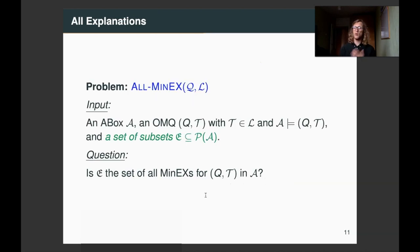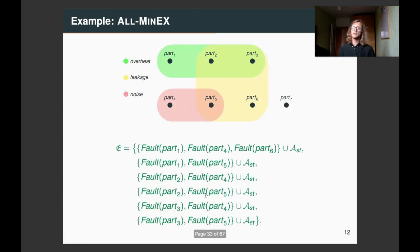Another fundamental problem is all min-ex. This is a problem of recognizing a set of all minimal explanations. That is, a decision version of the problem of constructing all minimal explanations. So, in our case, we have that there are six minimal explanations, and this is indeed the set that would be accepted.